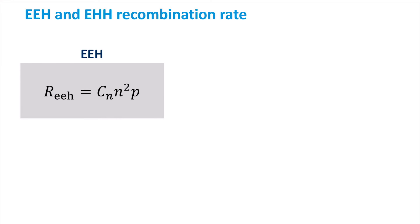Therefore, the recombination rate of the EEH process is given by the following equation. The recombination rate is proportional to the square of the electron concentration, N, since two electrons are involved in the process.